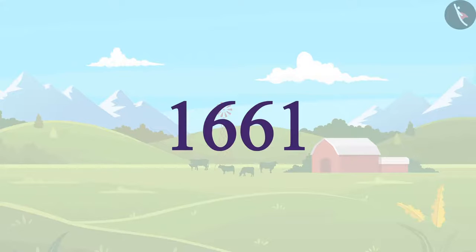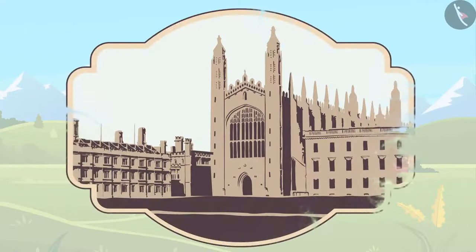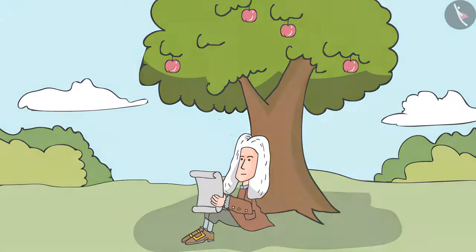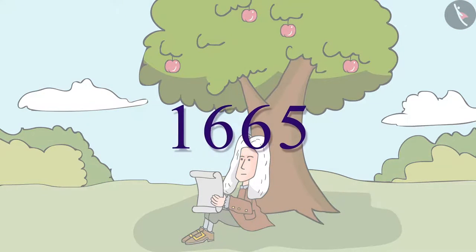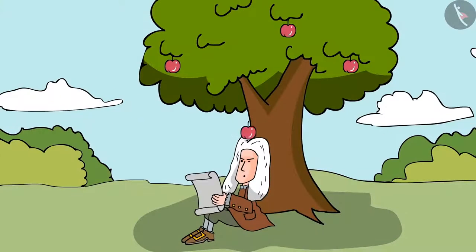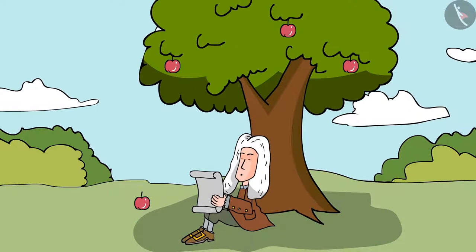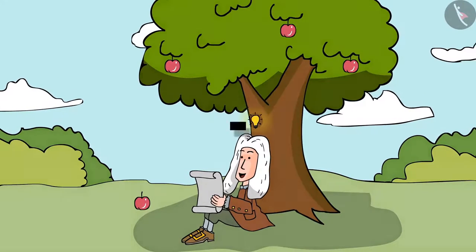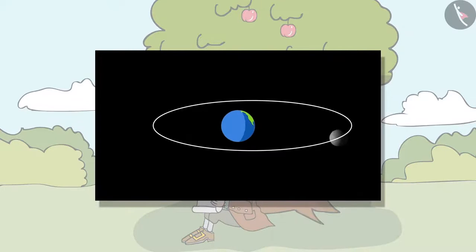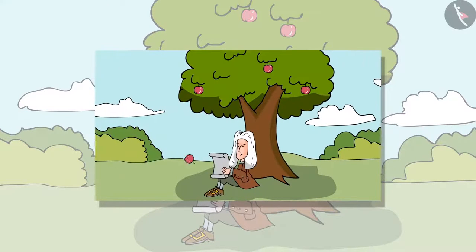In 1661, he was sent to study at Cambridge University. In 1665, it is said that an apple fell on his head and this encouraged Newton to connect the force that kept the moon in its orbit with the force that made the apple fall.